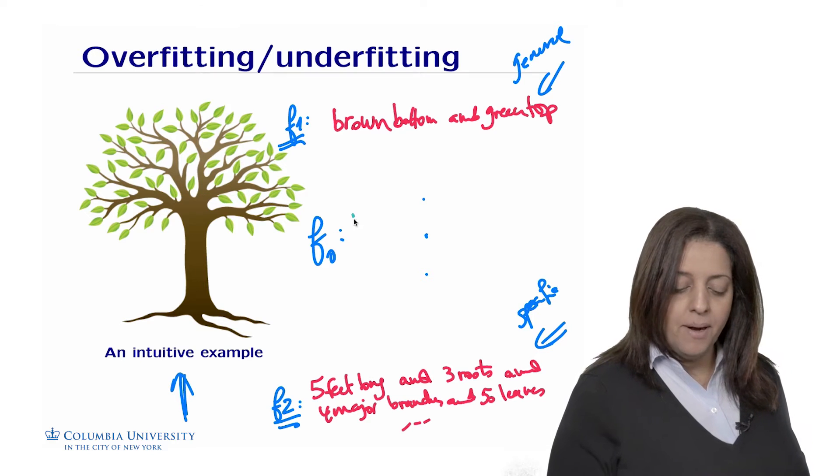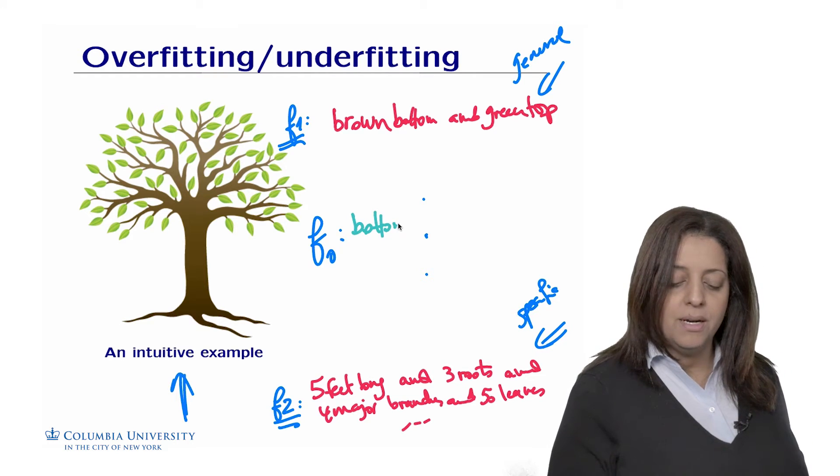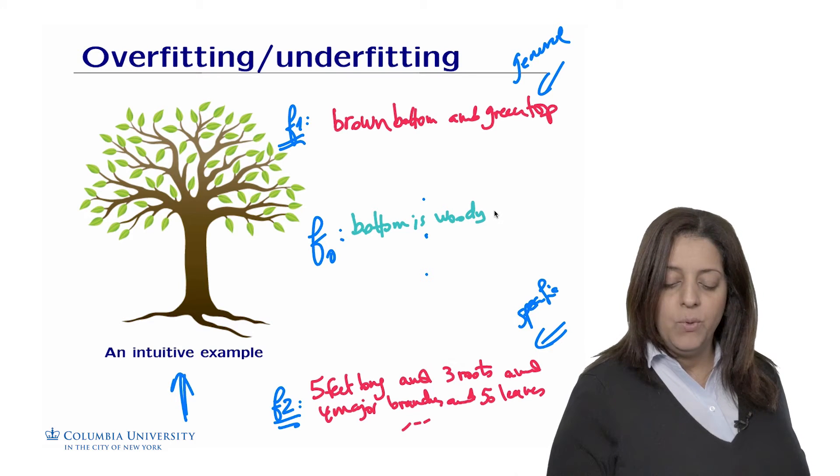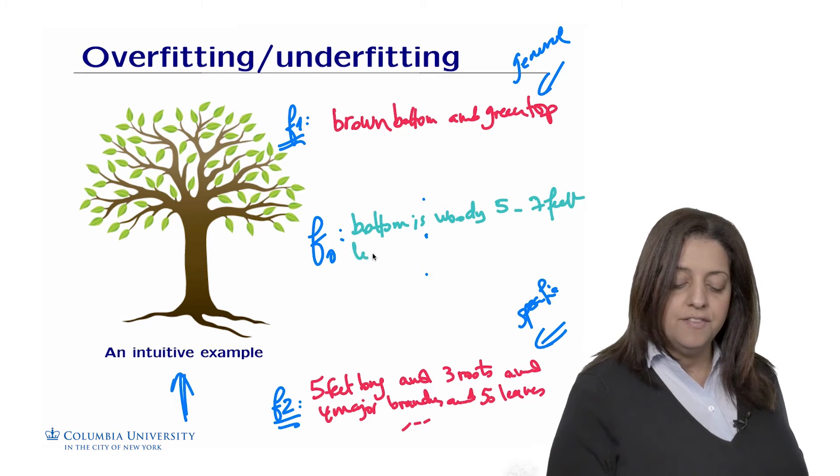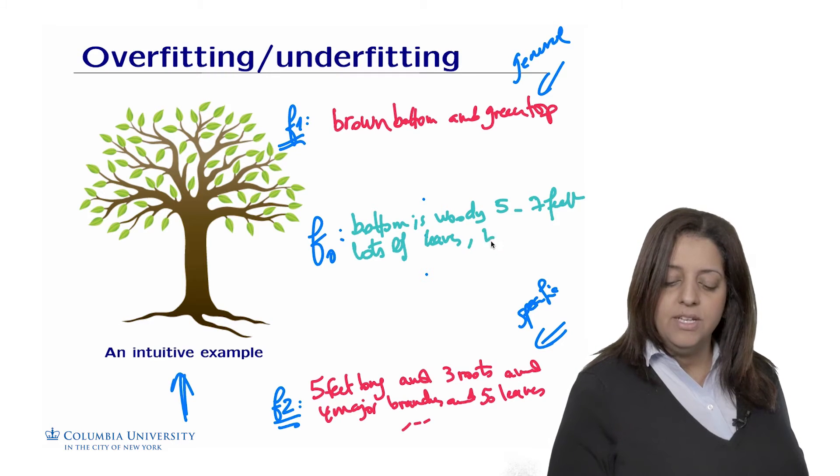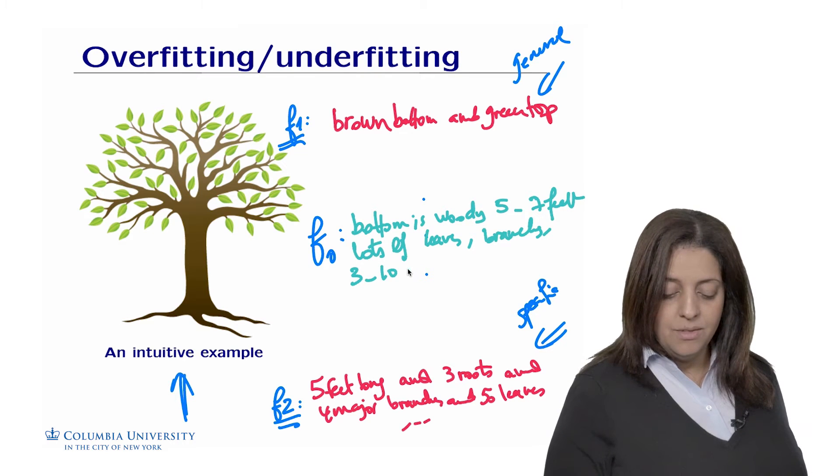So it could be like the bottom is a trunk, the bottom is woody, with between five and seven feet. We could say there is lots of leaves on the top, lots of leaves. It has branches.